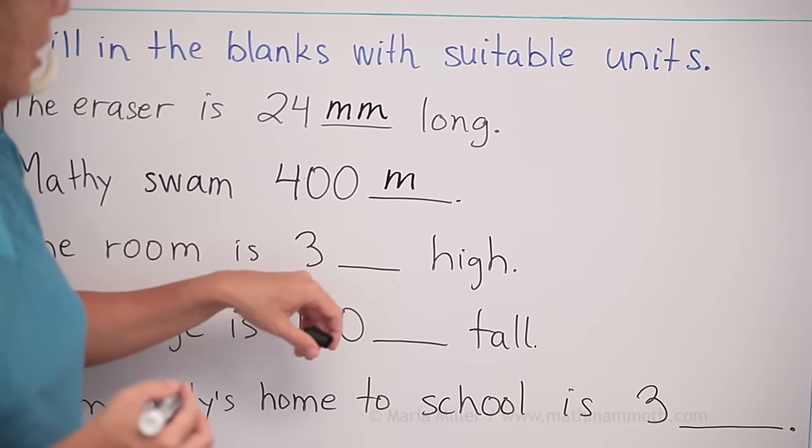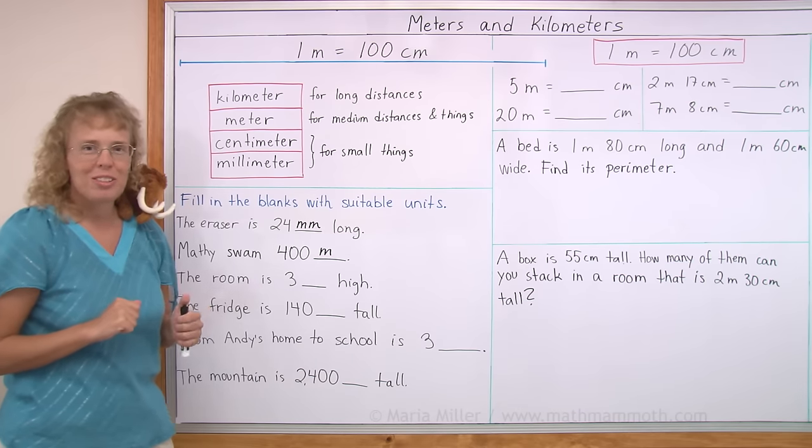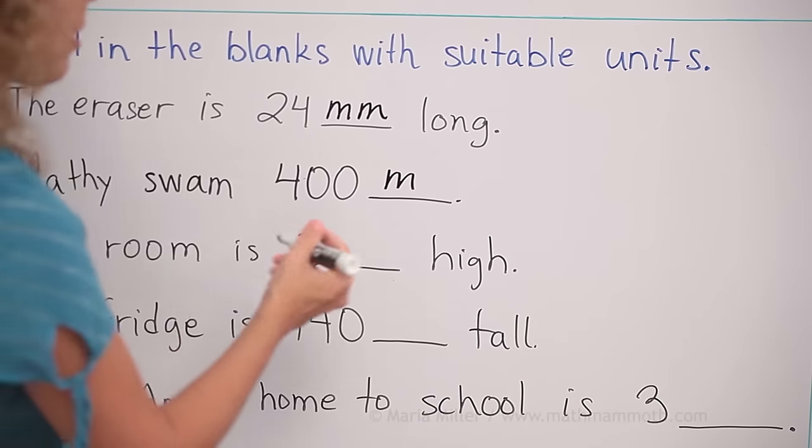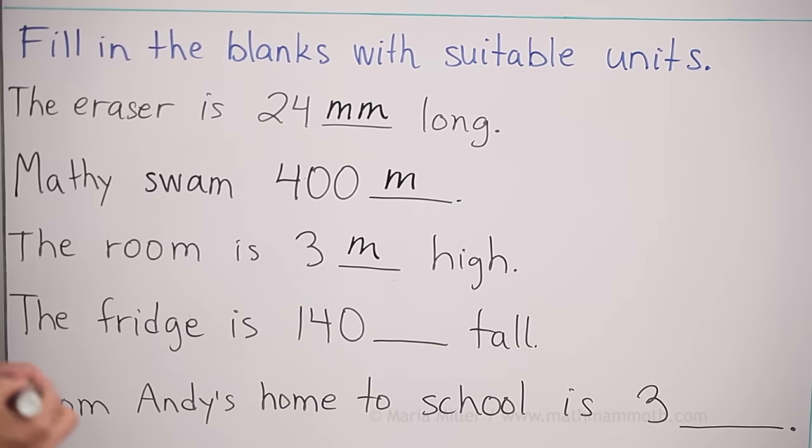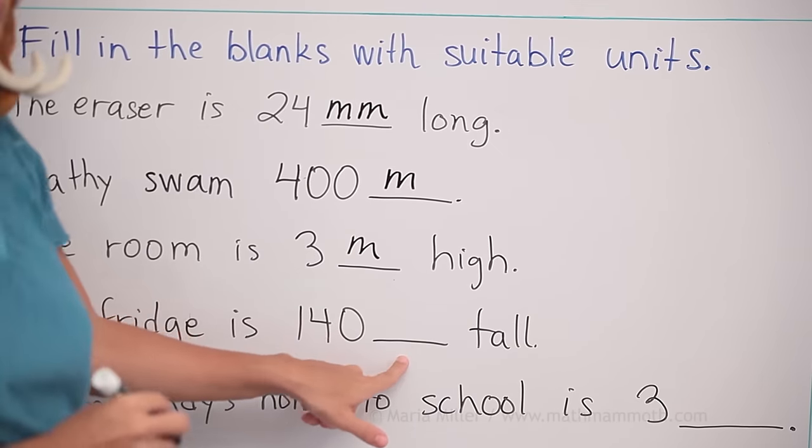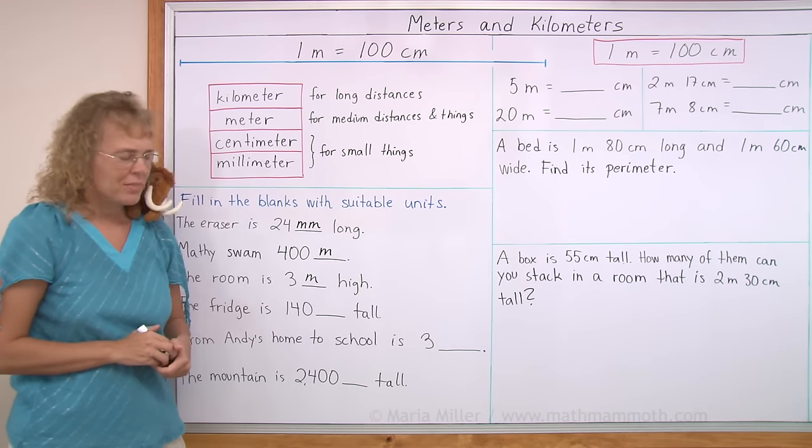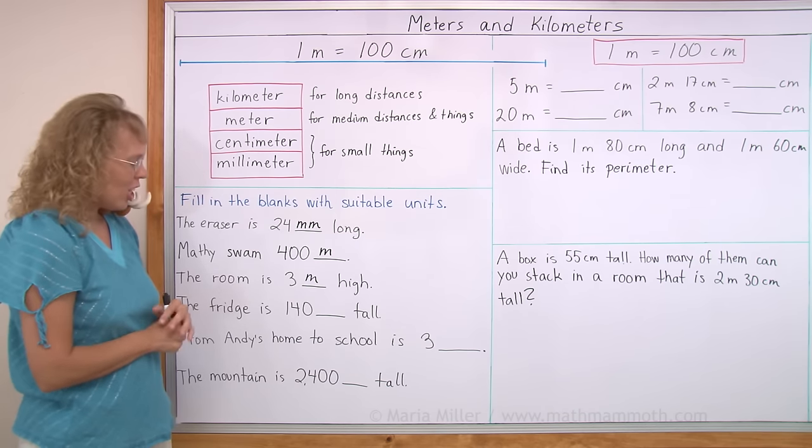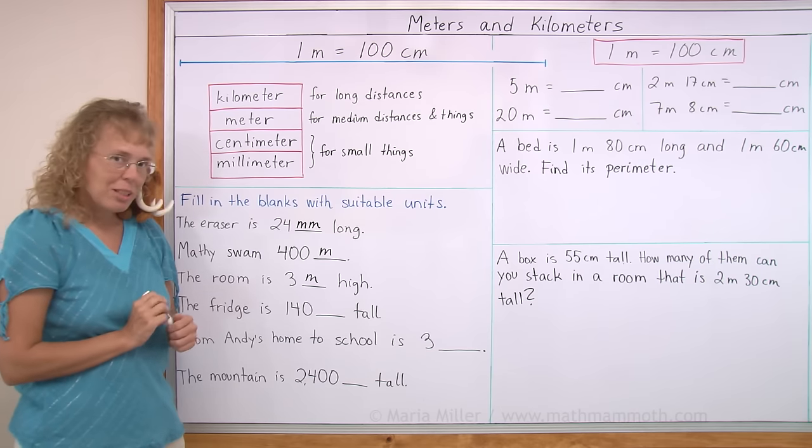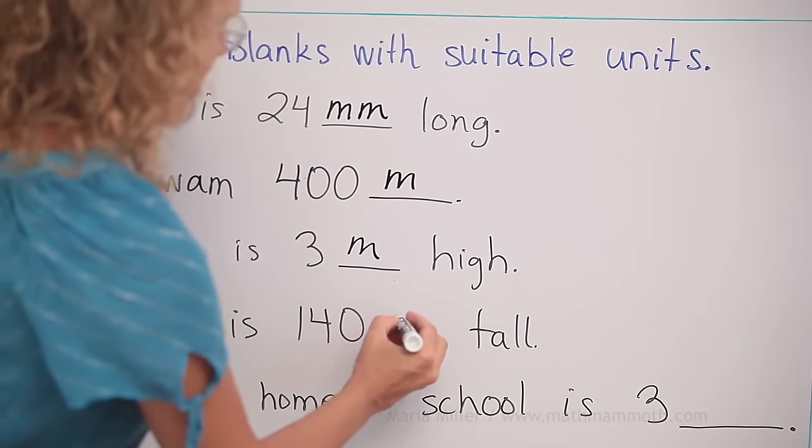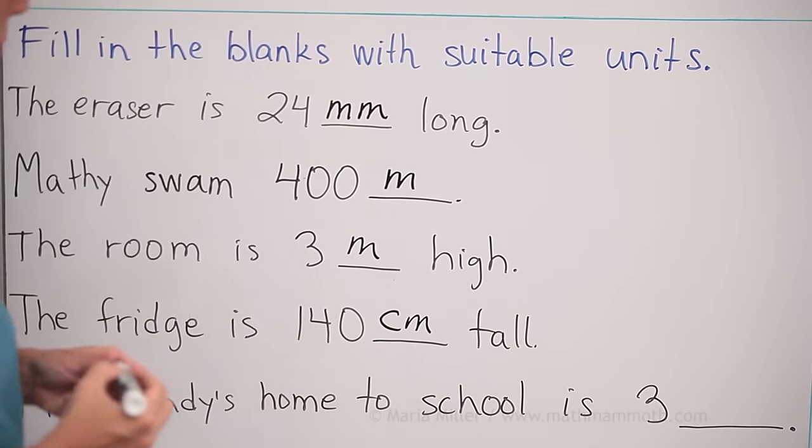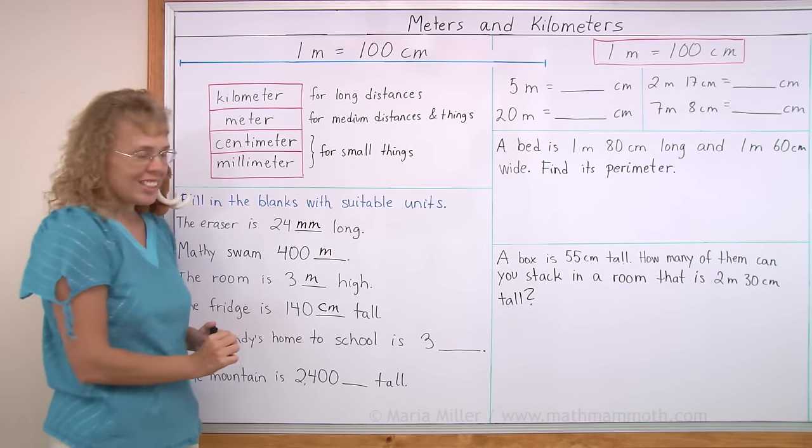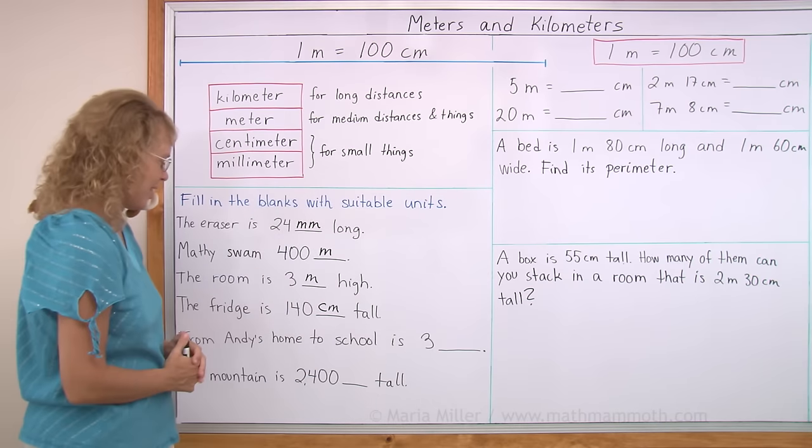The room is three something high. This is easy. I just told you about the room and it surely can't be three centimeters, right? It has to be three meters. The fridge is 140 something tall. Could it be 140 meters? Surely not. 140 centimeters? Yep. That's the right one. How about millimeters? 140 millimeters would be actually 14 centimeters. It would just be something like that, so no, that can't.